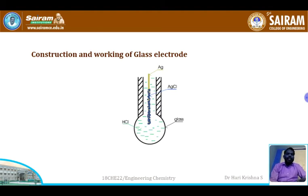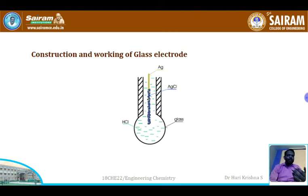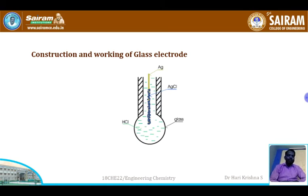The H+ ion exchange occurs because the H+ ion concentration inside the bulb is different from that outside. The exchange continues until the concentrations of H+ ions inside and outside the bulb become equal. While the exchange is occurring, a potential develops across the boundary. Once both concentrations are equal, the boundary potential EB should theoretically become zero.